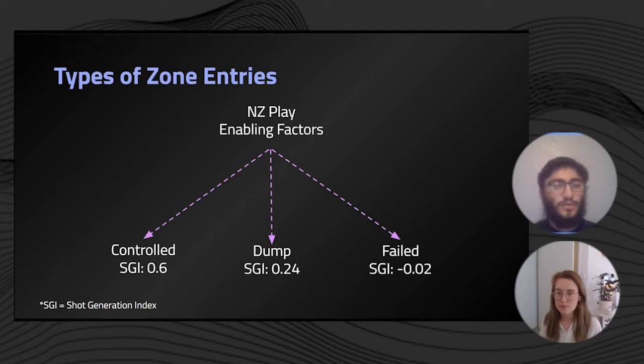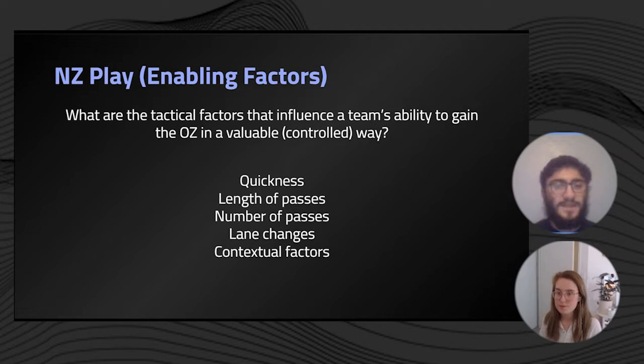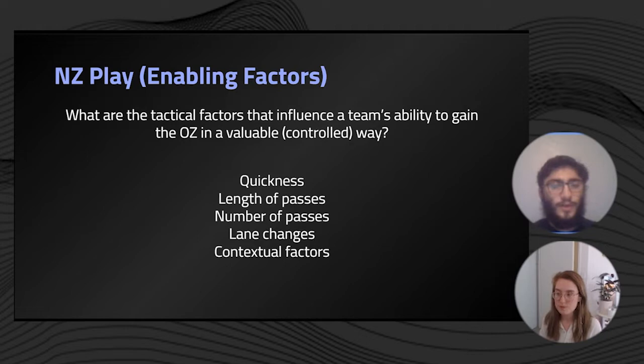In our analysis, we decided to focus our output on controlled entries to tackle the following question: what are the tactical factors that influence a team's ability to gain the offensive zone in a valuable, controlled way? Based on the Big Data Cup dataset, which Stathletes made available for all PHF games from last year, we picked five space-time characteristics of neutral zone play that we thought could influence a team's ability to gain the offensive zone successfully.